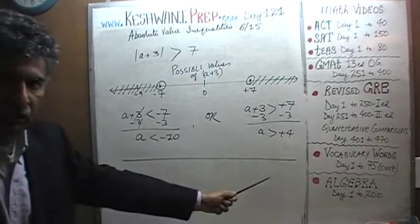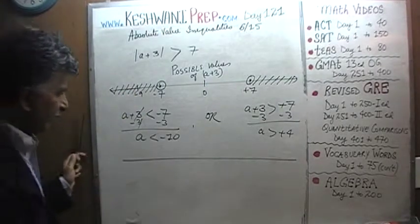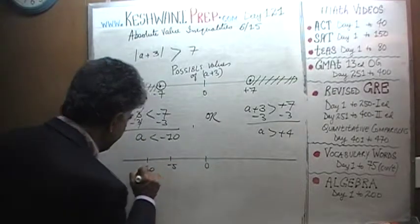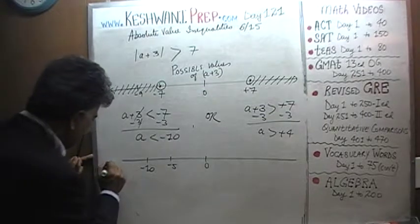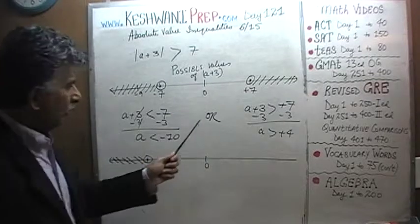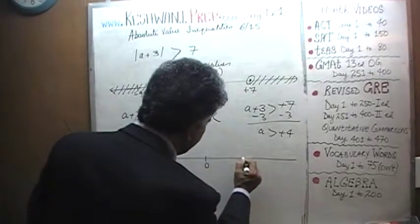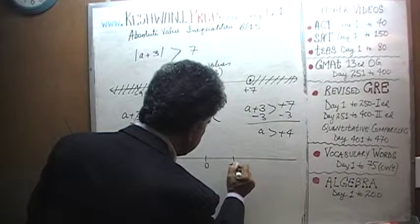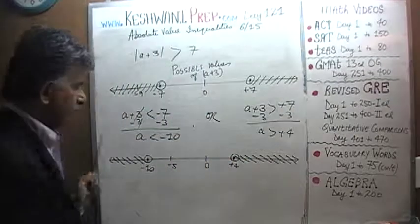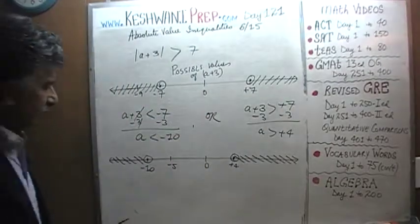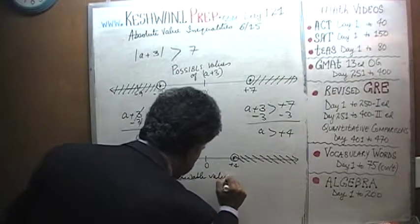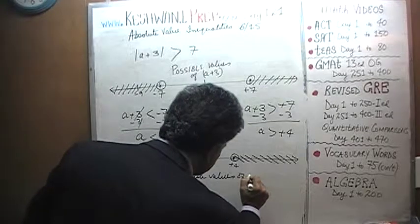Here we are going to show the allowable values of a. A has to be either less than negative 10 — so here is 0, here is negative 5, here is negative 10, and a lies to the left of negative 10 with an open circle — or a has to be more than 4. So we put 4 on the number line. These are the allowable values of a.